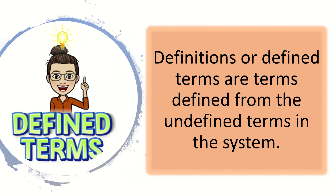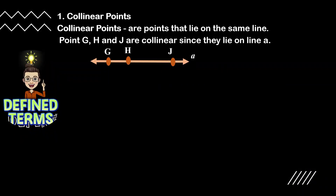Let us proceed to the second part of the mathematical system: the defined terms. Definitions or defined terms are terms defined from the undefined terms in the system. In geometry, the defined terms are terms defined from the point, line, and plane. For example, collinear points are points that lie on the same line. Point G, H, and J are collinear since they lie on line a.